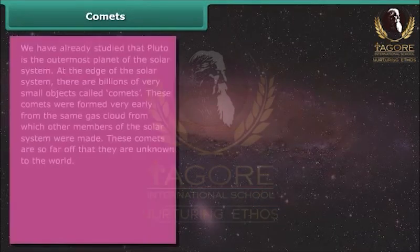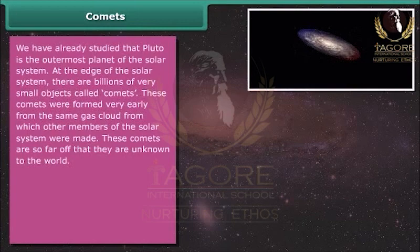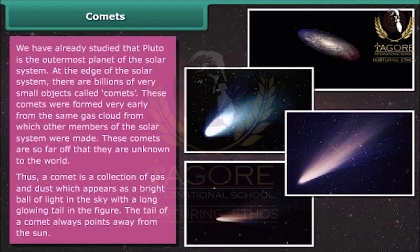At the edge of the solar system, there are billions of very small objects called comets. These comets were formed very early from the same gas cloud from which other members of the solar system were made. A comet is a collection of gas and dust which appears as a bright ball of light in the sky with a long glowing tail. The tail of a comet always points away from the Sun.